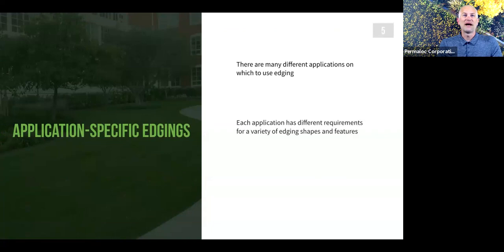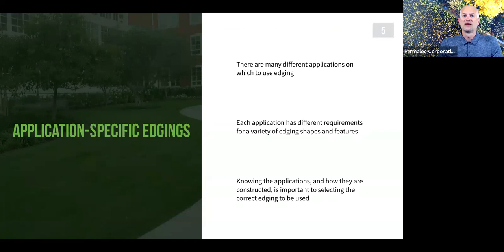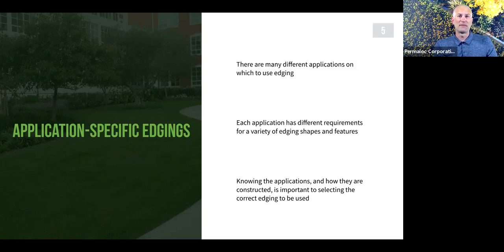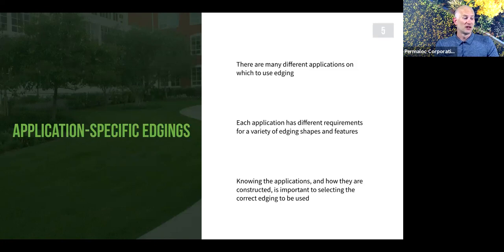Now let's look at some application-specific edgings. Edging is not a one-size-fits-all product. There are literally hundreds of shapes and sizes of edging, and the product choice depends completely on what the application is or what the edging is intended to do. There are many applications that require edging. If you think of anywhere in a landscape where two different materials or textures meet, that's a place where edging could and should be used. Each application can require a different shape, height, thickness, or even color of edging.